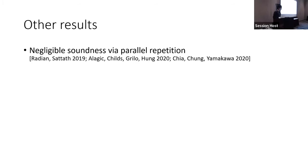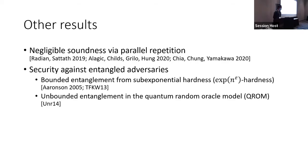This gives security against unentangled adversaries. The protocol we construct has only constant soundness, but you can amplify the soundness using a natural parallel repetition variant. For security against entangled adversaries, we need additional assumptions or an idealized model: if LWE is exponentially hard, we get security against any bounded entanglement; for unbounded entanglement, we boost the protocol to be secure in the quantum random oracle model.